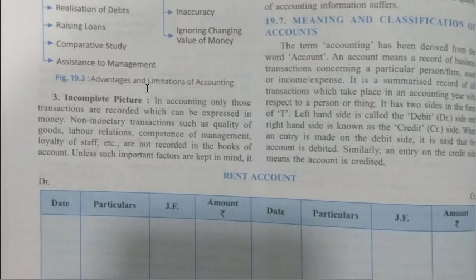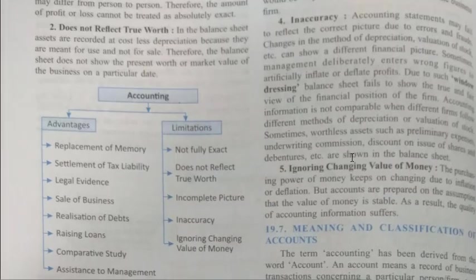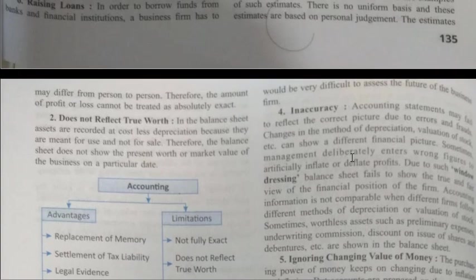The third limitation is an incomplete picture. In accounting, only those transactions are recorded which can be expressed in money. Non-monetary factors such as quality of goods, labour relations, competence of management, and loyalty of staff are not recorded in the books of account. Unless such important factors are kept in mind, it would be very difficult to assess the future of a business firm.